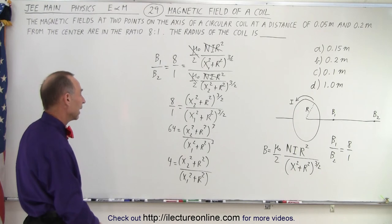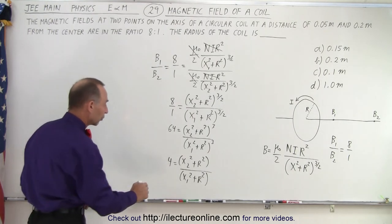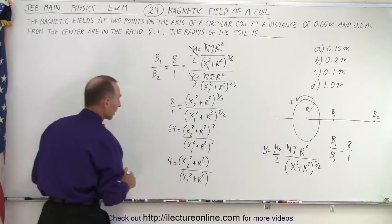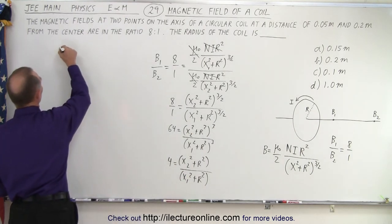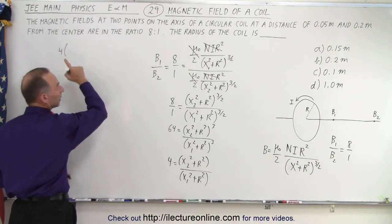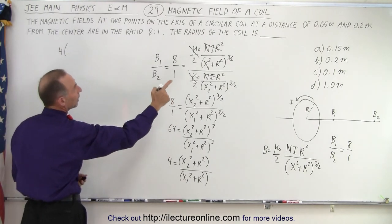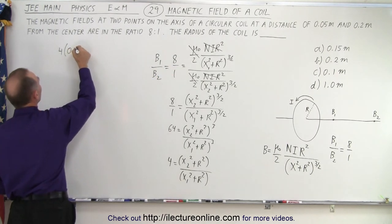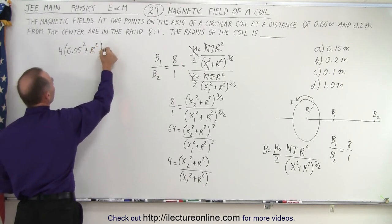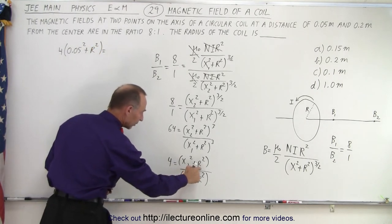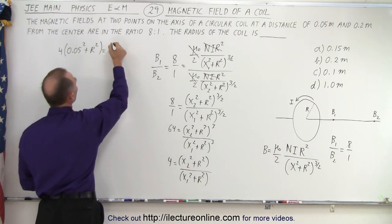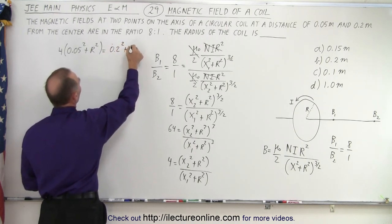So now we can go ahead and solve that equation for r. We're going to have to substitute x1 and x2. We can then say that 4 times x sub 1 squared, now x sub 1 would be the shortest distance that would be 0.05, so it would be 0.05 squared plus r squared equals x sub 2 squared that would be equal to 0.2 squared plus r squared.